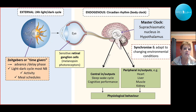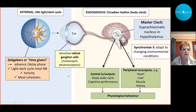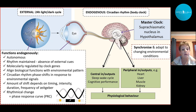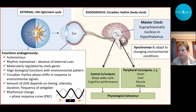The light-dark cycle is very important, specifically when we travel and need to advance or delay our phase. The gate to our master clock is the cells in the retina — the so-called melanopsin photoreceptors. To summarize: the circadian rhythm is autonomous and can be maintained even without external cues. There are clock genes involved, and the circadian rhythm is a phase response curve reacting to what we experience from the outside.